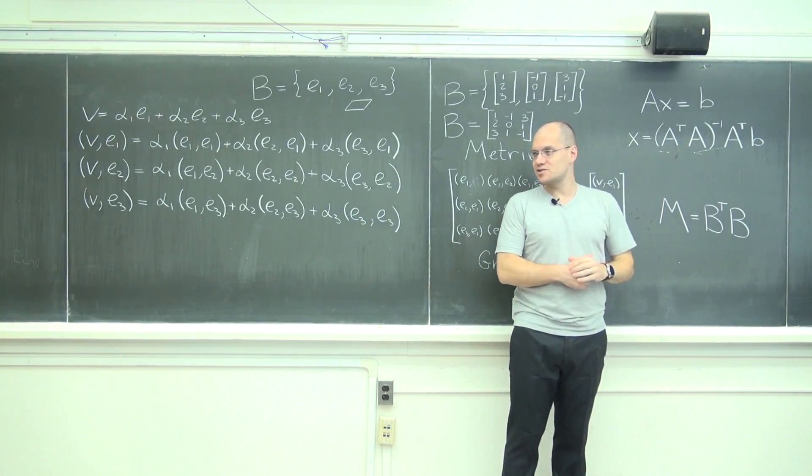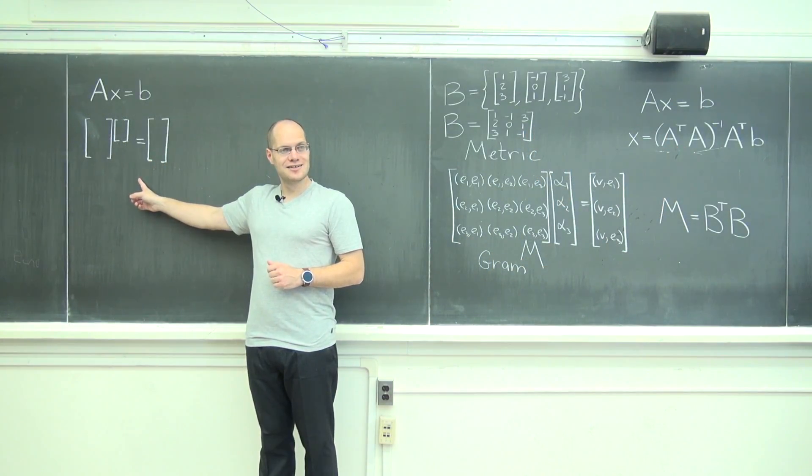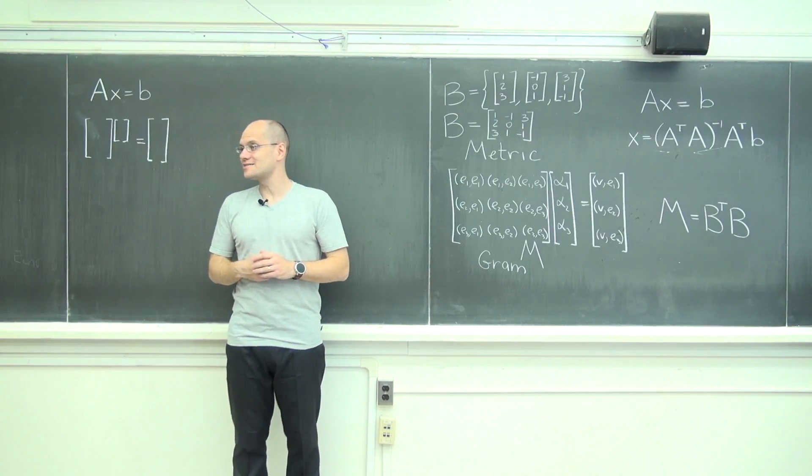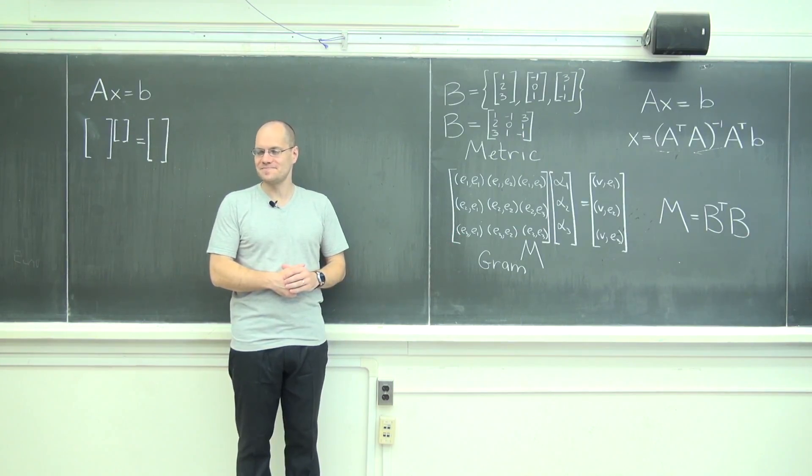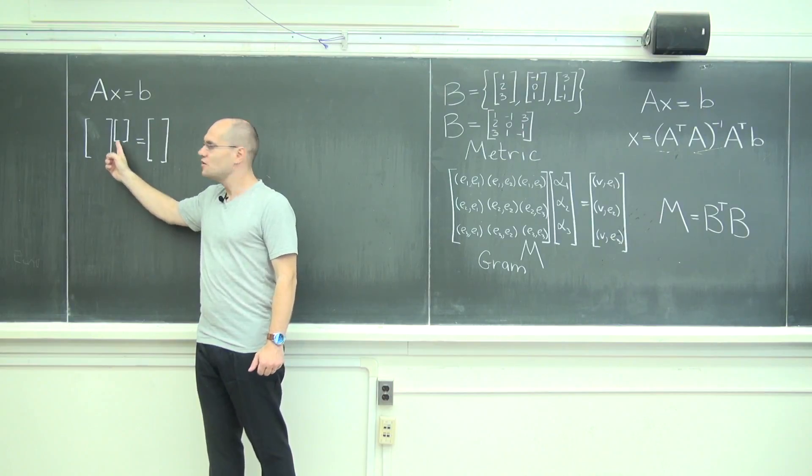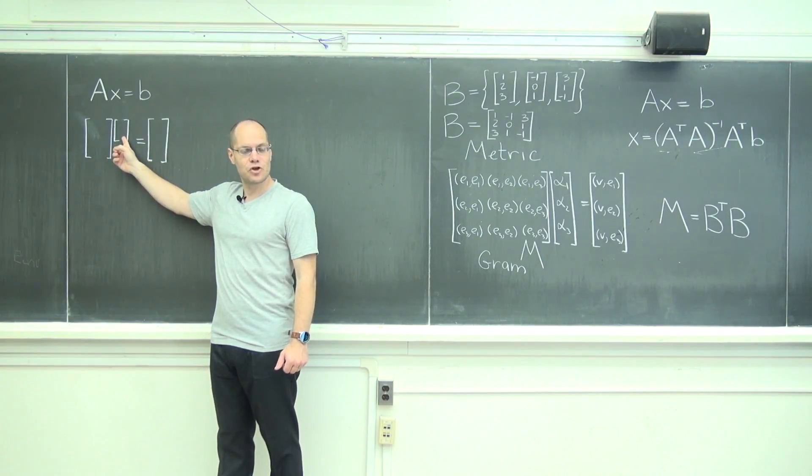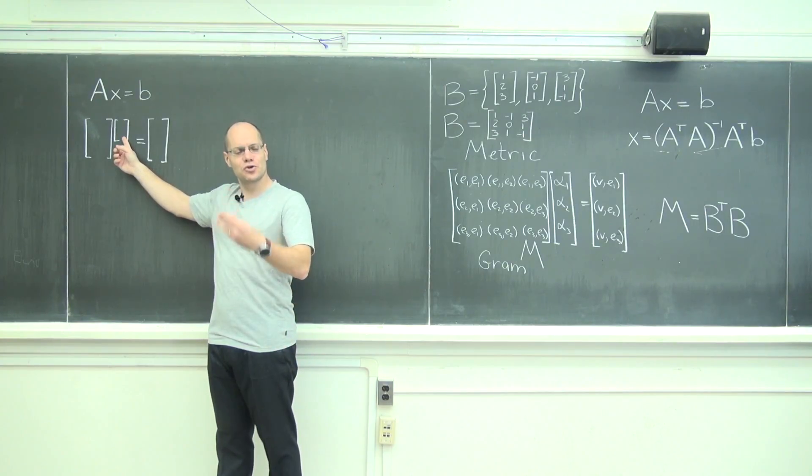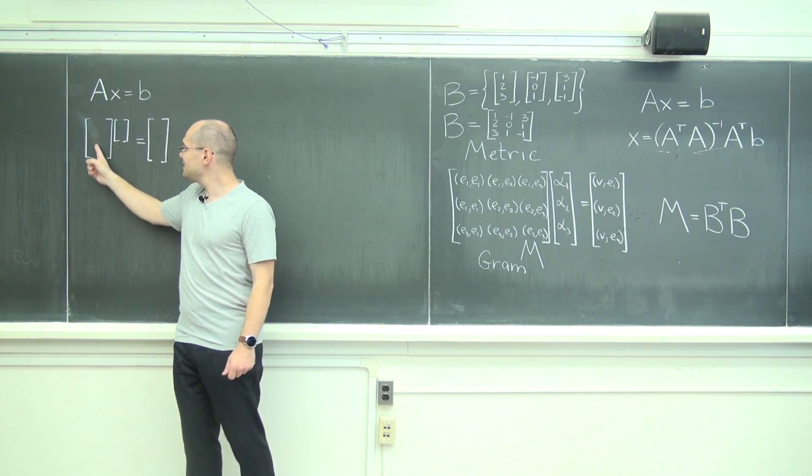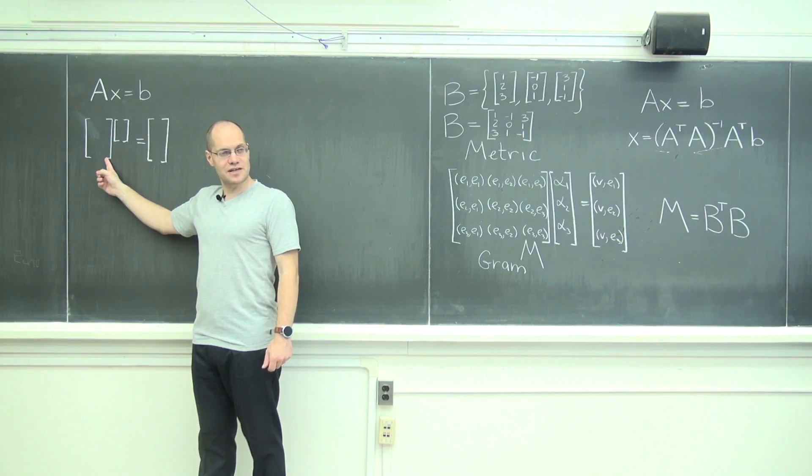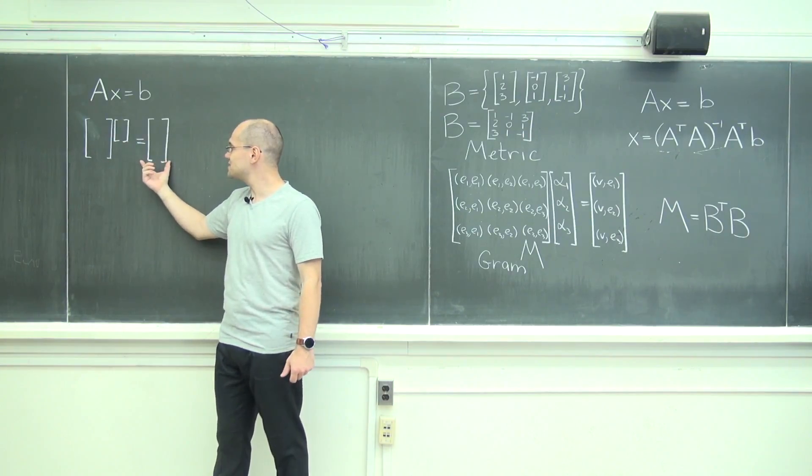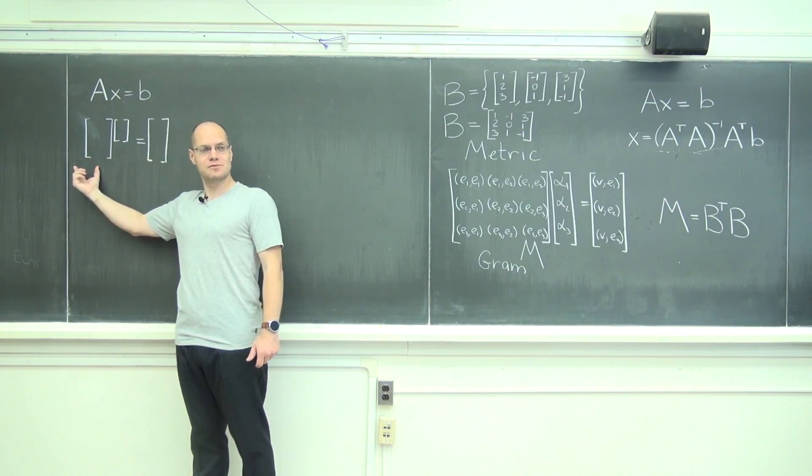So let me erase this part of the board and connect what we were just talking about to the least squares problem. So we're now going to discuss the least squares problem and connect it to inner products and the metric matrix that we just discussed. When you're in the least squares mode, you're dealing with a system where you have too many equations for the number of unknowns that you have. Or from the more fruitful interpretation of linear decomposition, you have to represent this vector as the linear combination of these vectors—of the columns of the matrix—and you just don't have enough to span the whole space. So there's almost no chance that the right-hand side is in the span of the columns of this matrix, or in other words, its column space.